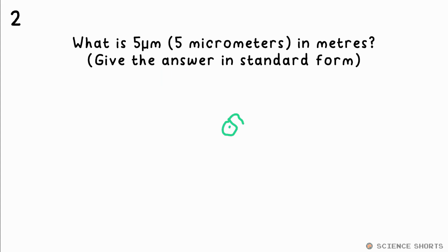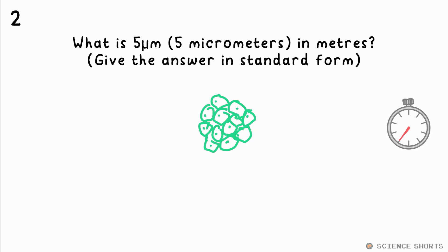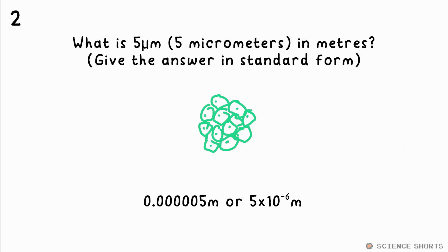Question 2. In standard form, what is 5 micrometres when converted to metres? It's 5 times 10 to the minus 6 metres. That's because micro means times 10 to the minus 6, or a millionth.